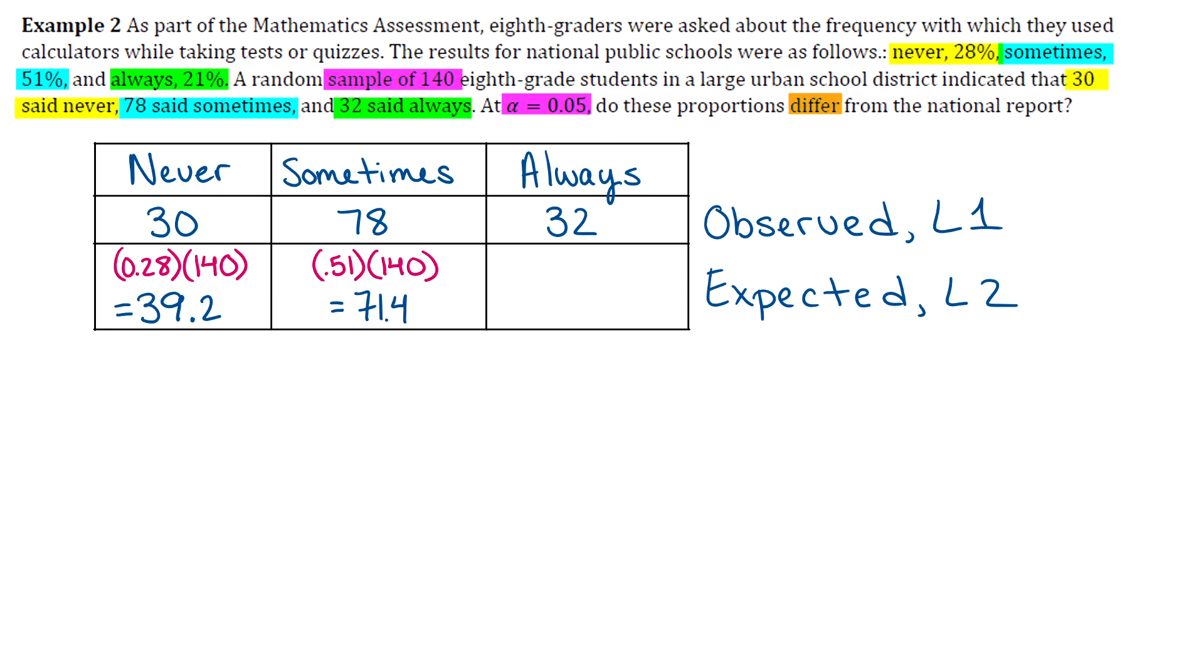And then for always, it was 21%. So we'll do 21% of 140. So 0.21 times 140, which comes out to 29.4.